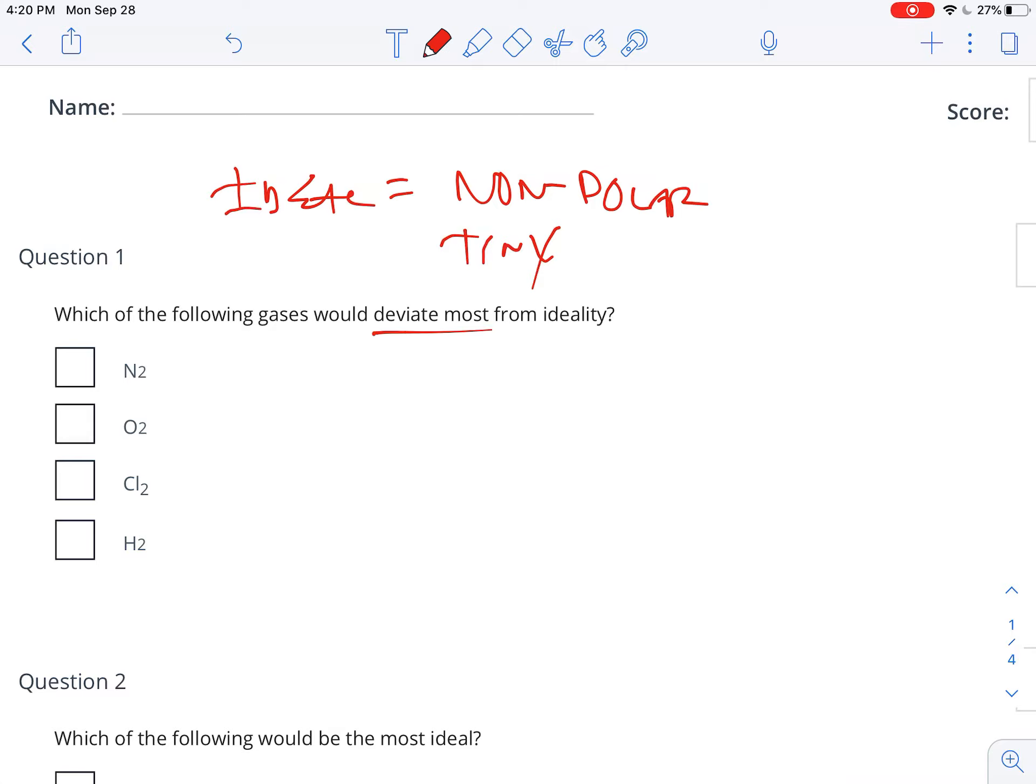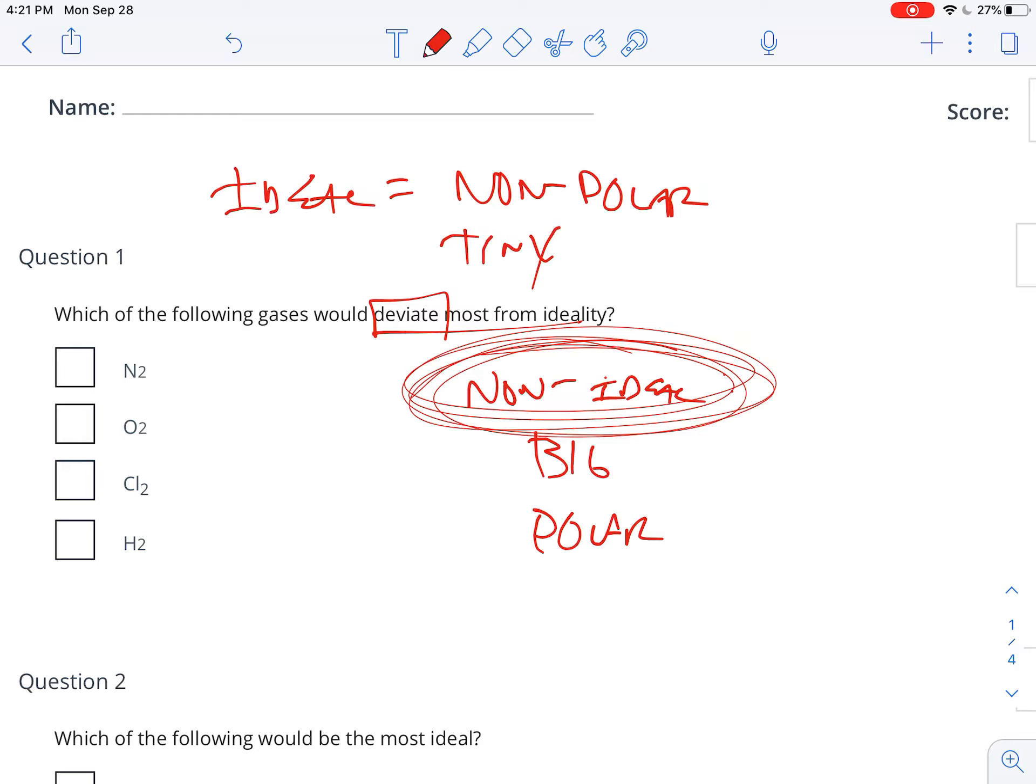So ones that deviate the most from ideality, the ones that are non-ideal, are the ones that are big and the ones that are polar. Ones that are big and polar are the non-ideal ones. So this one says which ones deviate the most from ideality, so they're looking for the one that is non-ideal: big and polar.